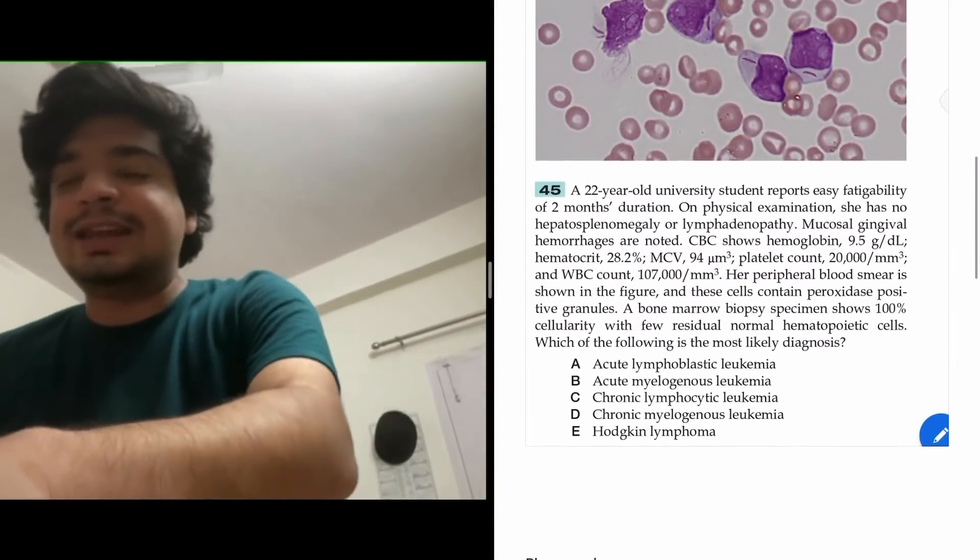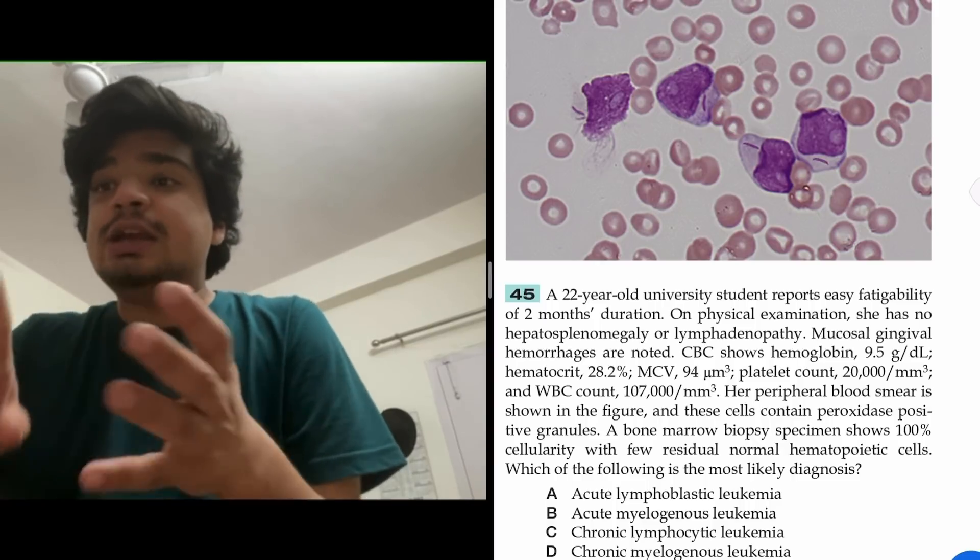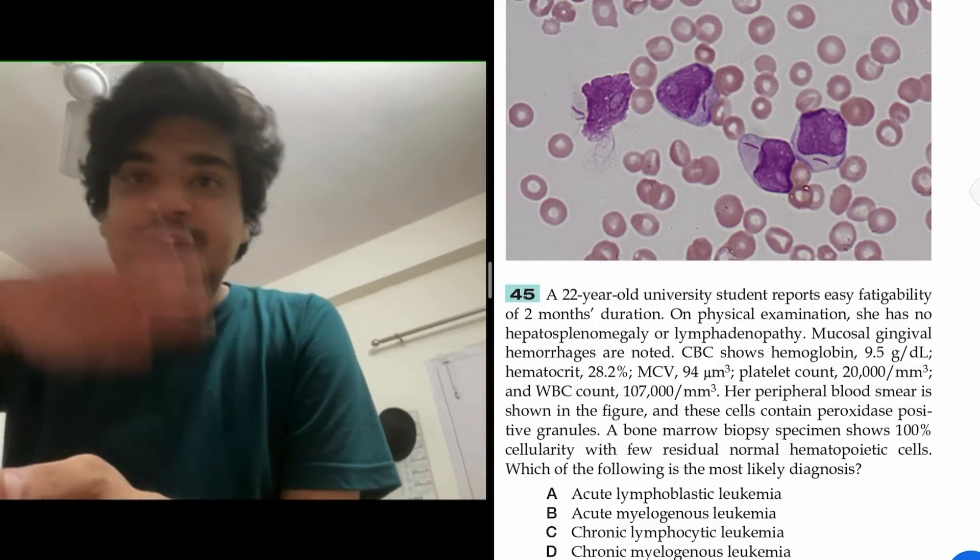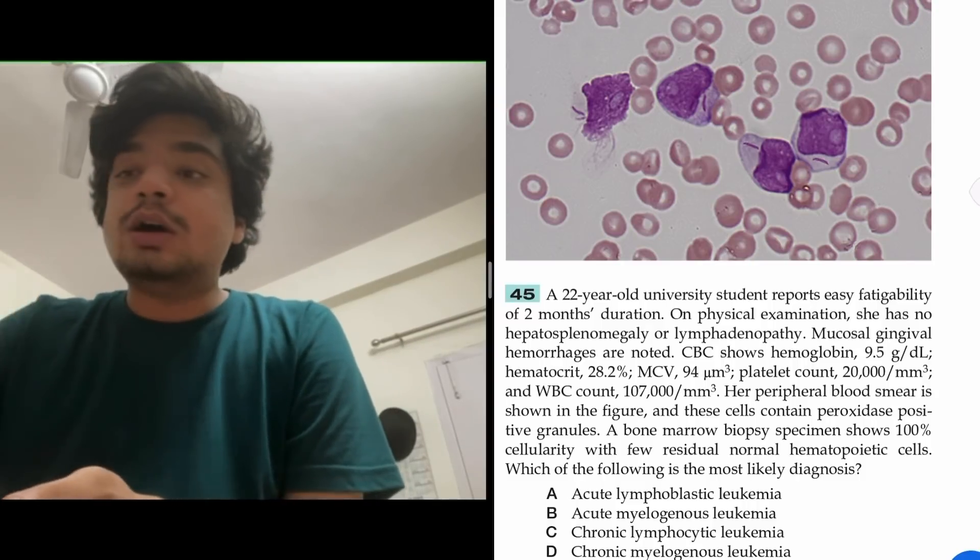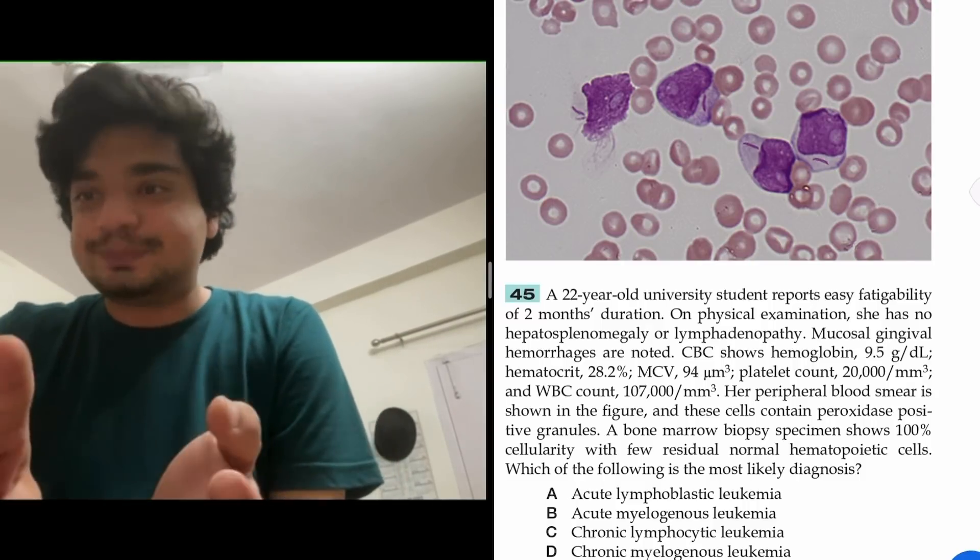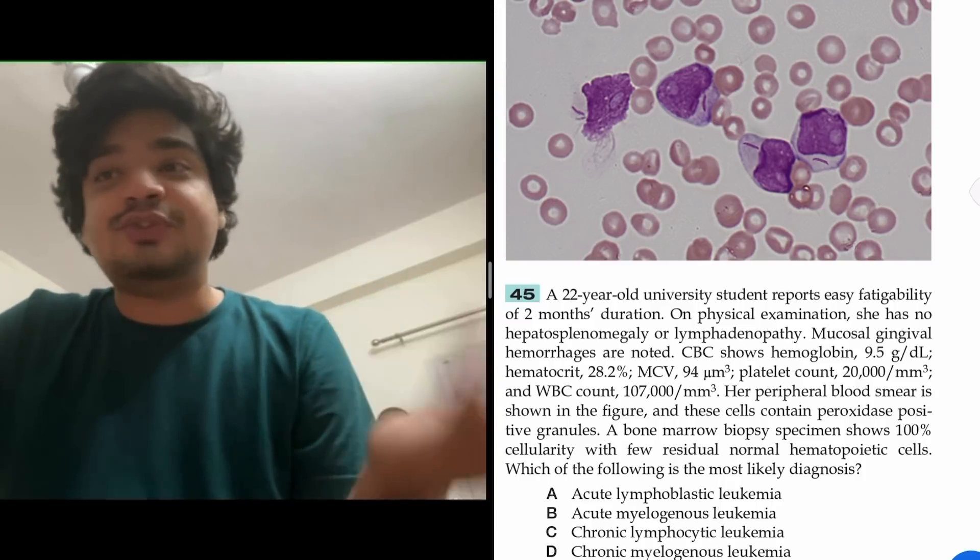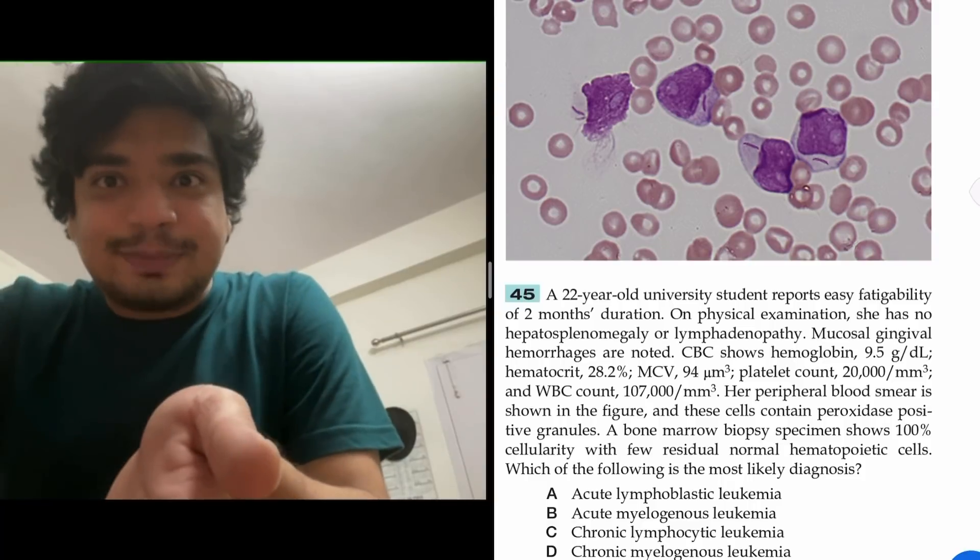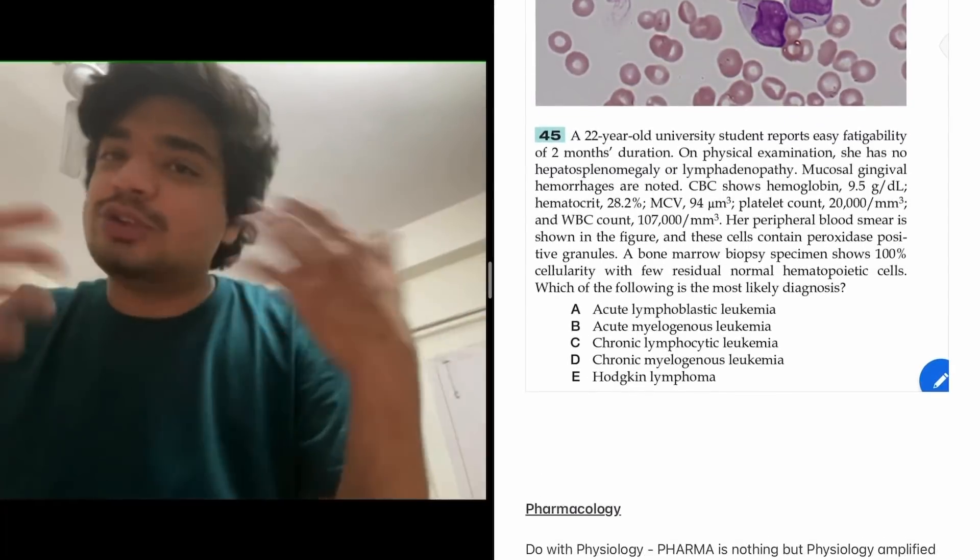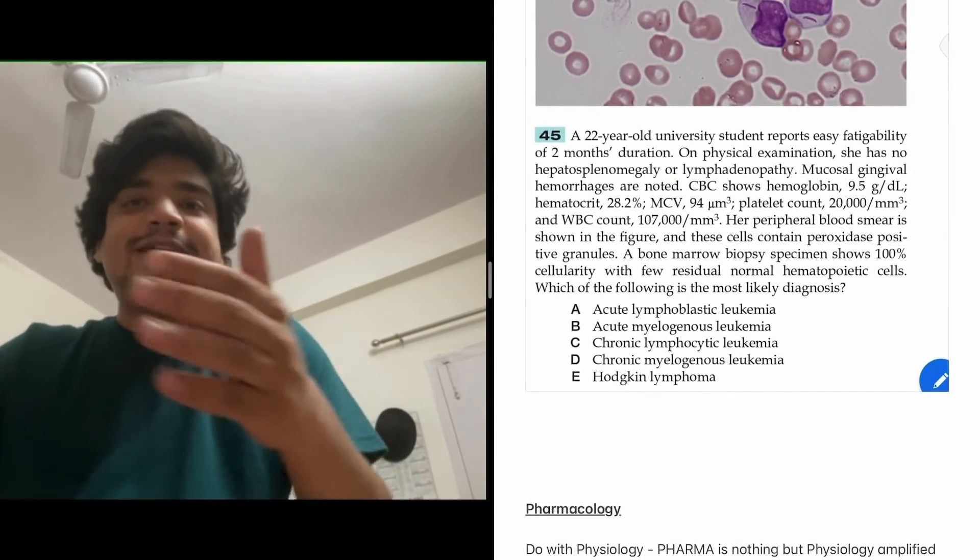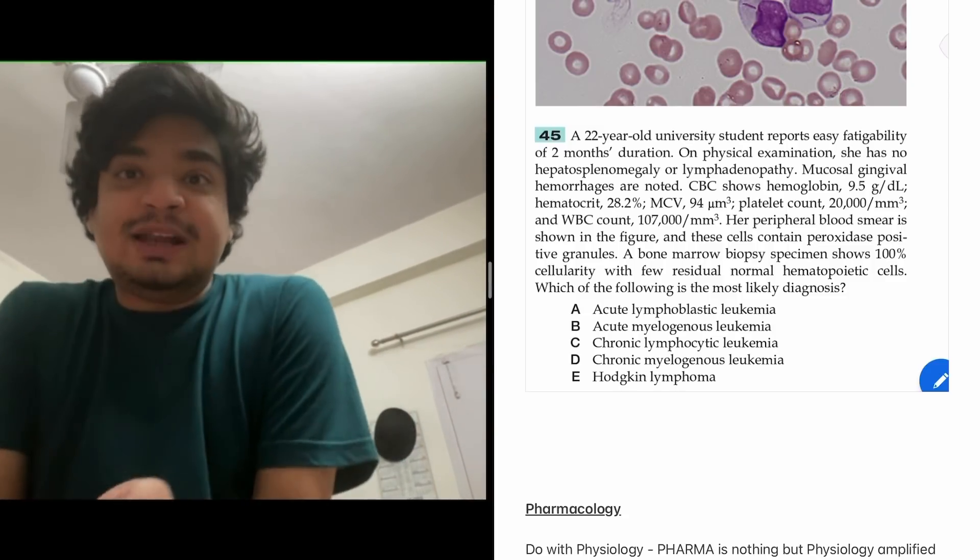Another question from hematopath given in this book: a 28-year-old female reports easy fatigability. She has pancytopenia - actually not pancytopenia, platelets and hemoglobin are low but WBC is through the roof. Her blast cells are shown here, they're MPO positive and contain granules. Which is the most likely diagnosis? This is a typical presentation of AML. They've given you blast cells with typical Auer rods you can see here. They have voluminous cytoplasm, they are myeloid blasts.